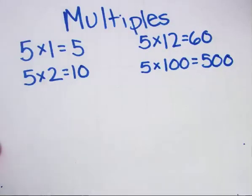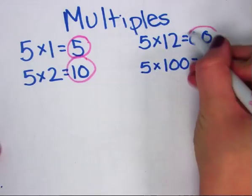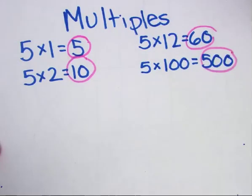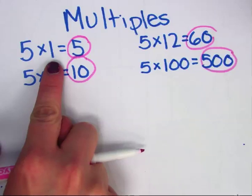My multiples of 5 are 5, 10, 60, 500, because I can get them by multiplying 5 by another number.